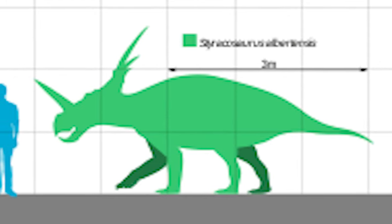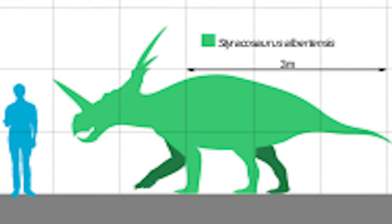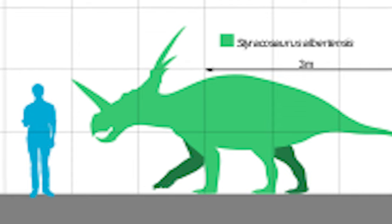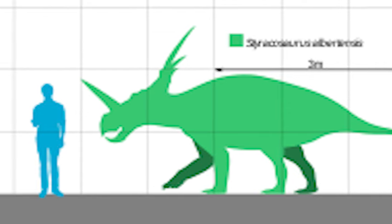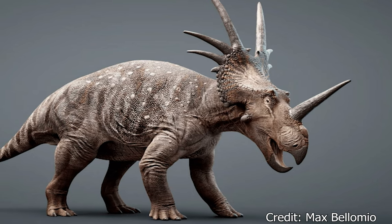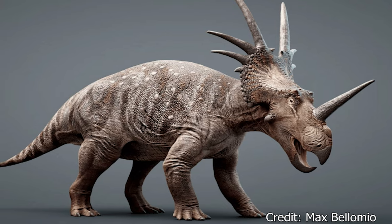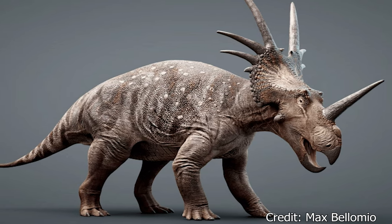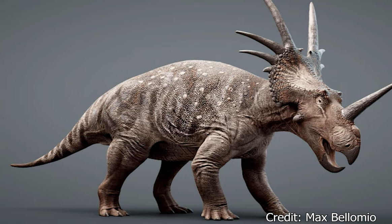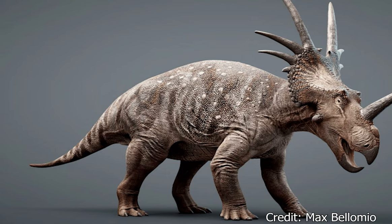The Ceratopsidae were quadrupedal herbivores that dominated the North American continent during the Cretaceous period, between 145 and 66 million years ago. Styracosaurus itself could reach between 16 to 18 feet in length and approximately 6 feet tall. They could weigh about 2 tons — as much as a modern-day white rhino. Their body structure also resembled a rhinoceros, with powerful shoulders to support its head and strong hind limbs to carry its heavy body. It had a comparatively short tail to counterbalance its body and head.